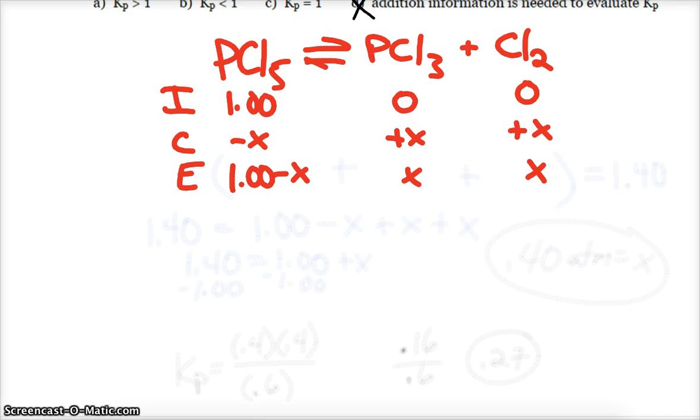Since I'm trying to find Kp, I'm doing a pressure ICE table. It told me initially I had one atmosphere of pressure. This is our pressure. So one atmosphere of pressure, none of the PCl3 or Cl2. My change comes from the 1 to 1 to 1 mole ratio. So reactants minus x, products plus x plus x. And so at equilibrium, 1 minus x, x and x.